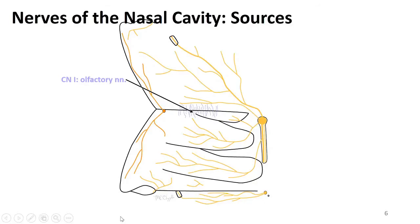Let's move on to the nerves of the nasal cavity. There are two major sources: one through V1 and the other through V2. I also want to note that the superior area of both the septum and the lateral wall are the olfactory areas, which contain the olfactory epithelium. The olfactory nerves project through the cribriform plate up to the olfactory bulb.